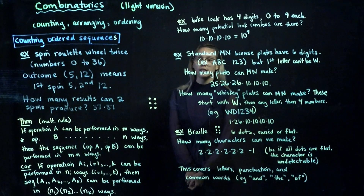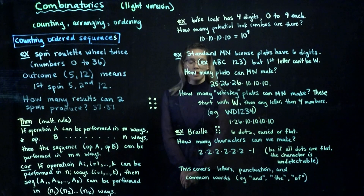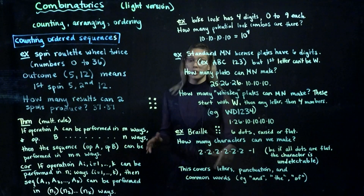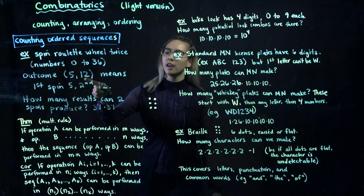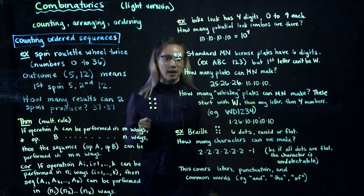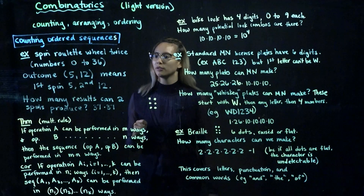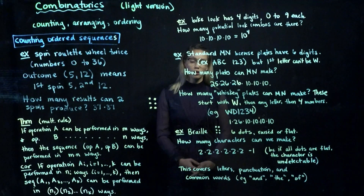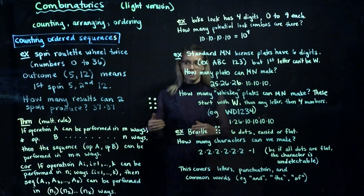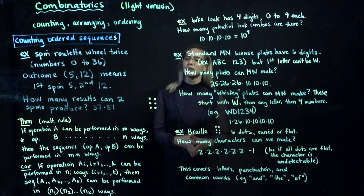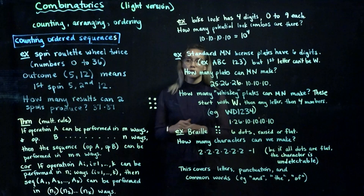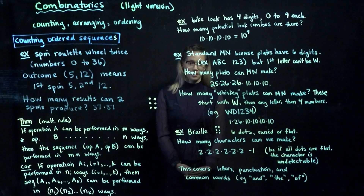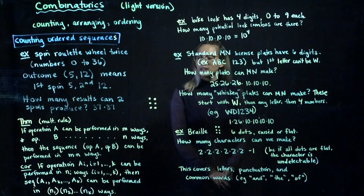The first thing we're going to cover is counting ordered sequences. Imagine you go to the casino and there's a roulette wheel. You spin that wheel twice, and on the wheel there are numbers 0 to 36. If we write the outcome (5, 12), that means the first spin is a 5 and the second spin is a 12. One spin gives us numbers 0 to 36, so we have 37 options. For the second spin we also have 37 options, giving us 37 times 37 different results.